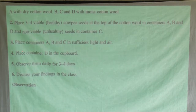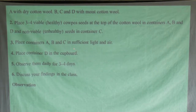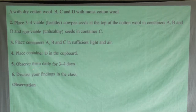For part three: we shall place containers A, B, and C in sufficient light and air — meaning with enough light and air. Remember container C has non-viable seeds. For part four: we shall place container D in a cupboard, though it will have viable seeds which are about to germinate. For part five: we shall observe them daily for at least three to four days. Then we shall look at discussing the findings after doing all these.